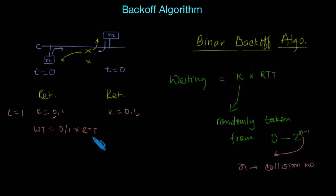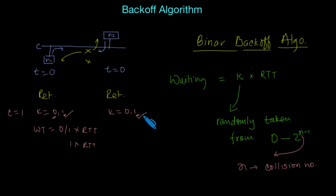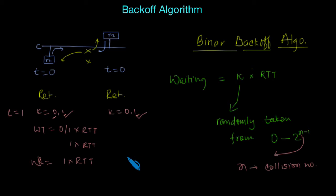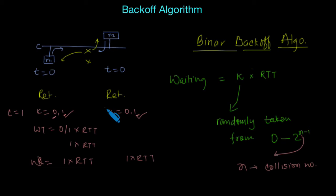If both choose the same number, say 1, then both will wait for 1 times RTT and then attempt retransmission. Since the waiting time is the same for both, after waiting 1 times RTT they will attempt retransmission and then again they will collide.